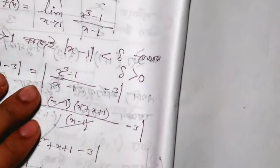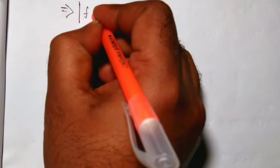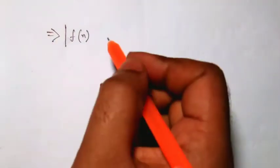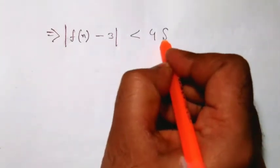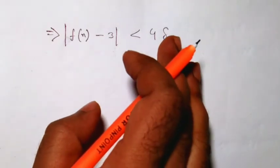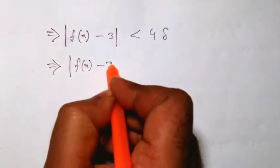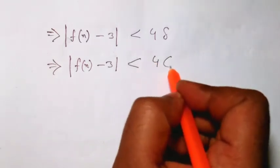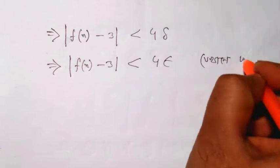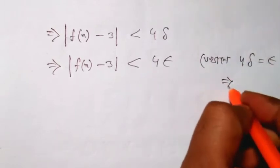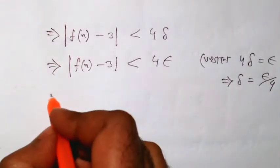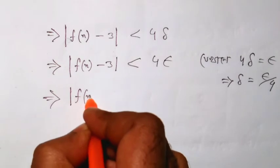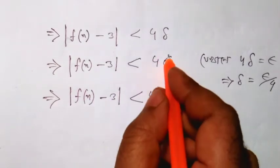So this is x minus 1 less than delta. We have f of x minus 3 less than 4 times delta. Since x minus 1 is less than delta, we get f of x minus 3 less than 4 delta. Setting delta equal to epsilon divided by 4, we get f of x minus 3 less than 4 times epsilon over 4, which equals epsilon.